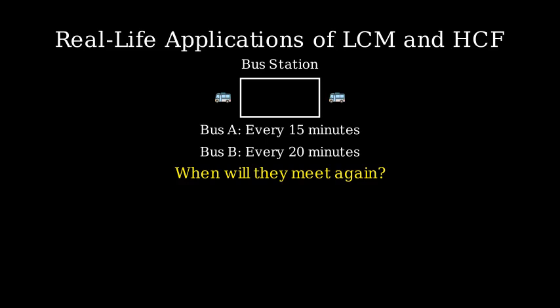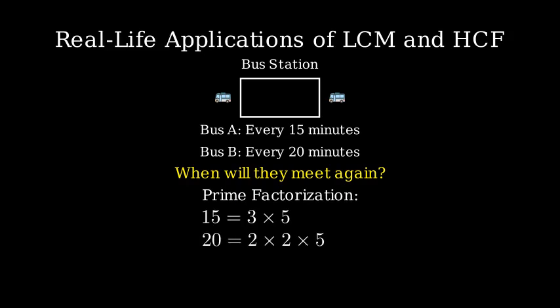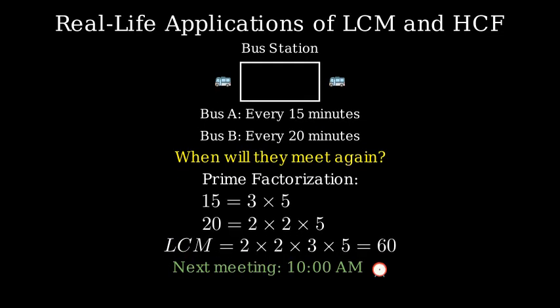To solve this, we need to find the LCM of 15 and 20. Let's break down 15 and 20 into their prime factors. 15 equals 3 times 5, 20 equals 2 times 2 times 5. The LCM will be 2 times 2 times 3 times 5 equals 60. Therefore, the buses will meet again after 60 minutes, which means at 10 a.m.